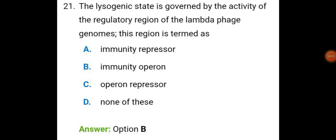The lysogenic state is governed by the activity of the regulatory region of the lambda phage genomes. This region is termed as immunity operon.